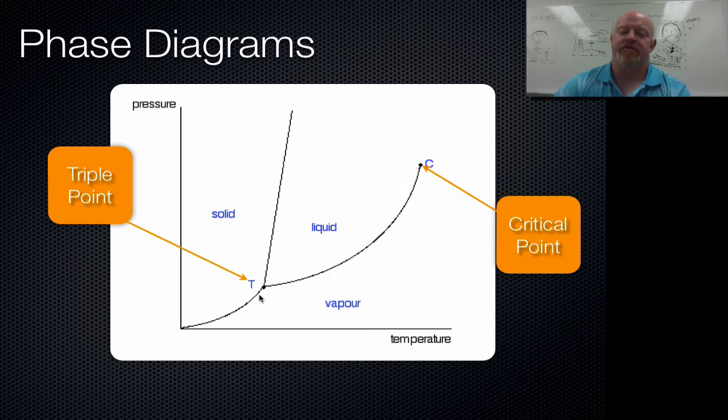Now the different lines represent different things. So this line right here is your break point between being a solid and liquid, or it's also called the freezing point. This line is between liquid and vapor, so this is going to be your boiling point or your condensing point, depending on which way you're going. If you're going liquid to vapor it's boiling, if you're going vapor back to liquid it's condensing.